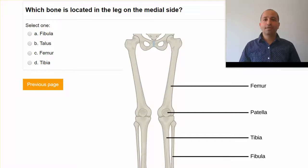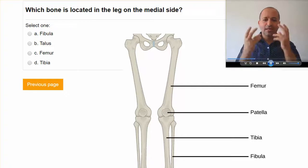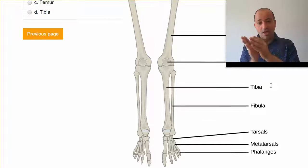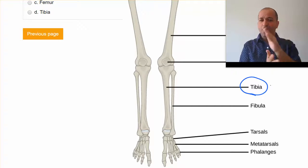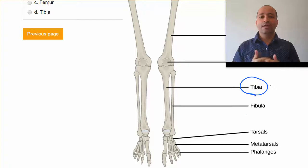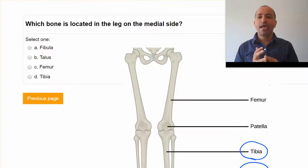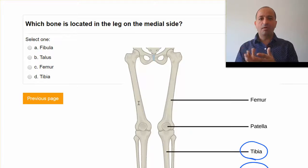Which bone is located in the leg on the medial side? When we look at the leg area, there are two bones. One bone is thicker on the medial side — we call it the tibia. One bone is thinner on the lateral, slightly posterior side — we call it the fibula. So the answer choices are fibula, talus, femur, and tibia. Because they want the medial one, the answer is tibia.